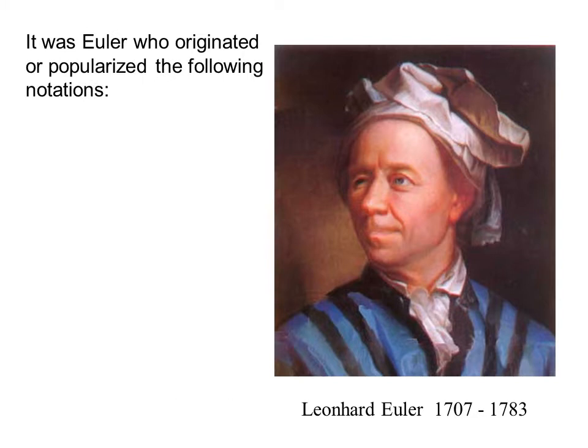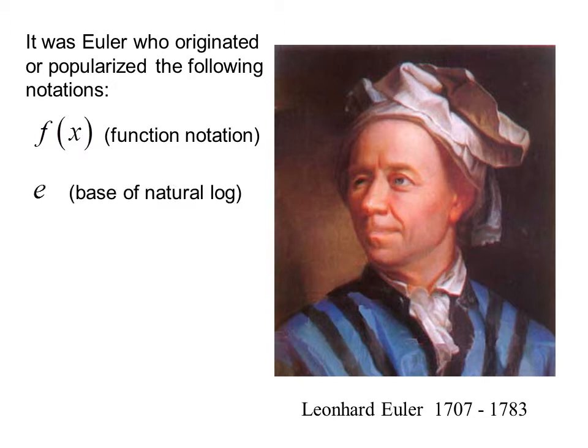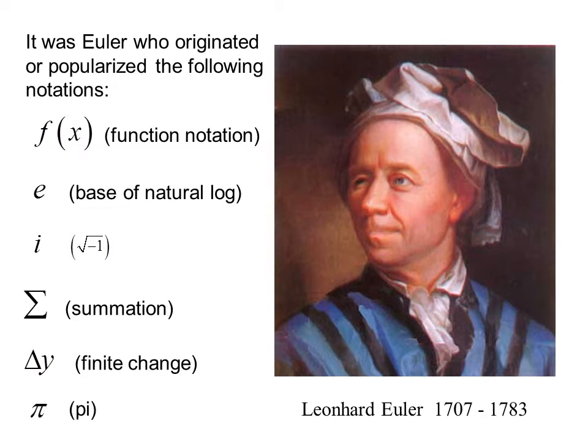It was Euler who originated or popularized the following notations: f of x or function notation, e as the base of natural log, i as the square root of negative 1, the summation symbol, delta y for finite change, and believe it or not, the pi symbol for pi.